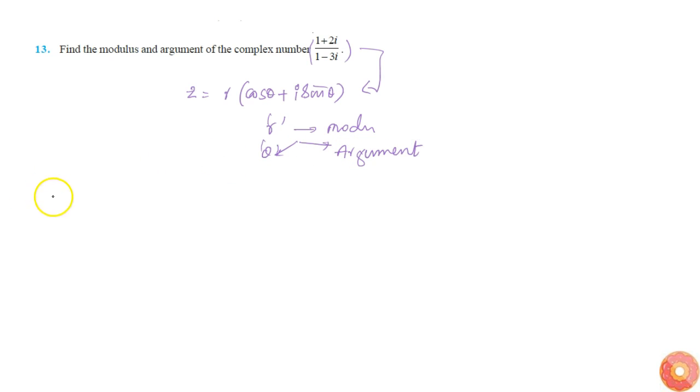So in this question, the complex number is (1 + 2i)/(1 - 3i). I can multiply with conjugate of this denominator. So this will become (1 + 3i)/(1 + 3i). This is simply equal to, 1 plus 9 is 10, and in the numerator we get 1 + 3i + 2i - 6. This is simply (-5 + 5i)/10 which can be written as (-1 + i)/2.